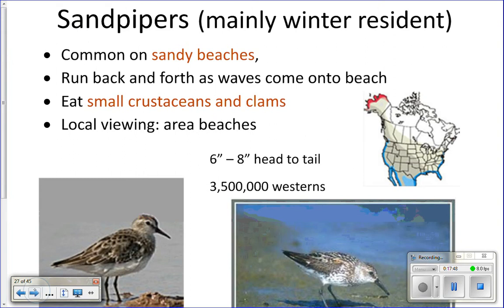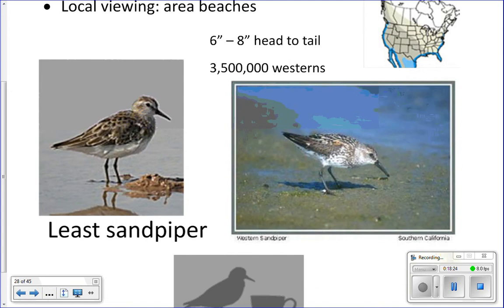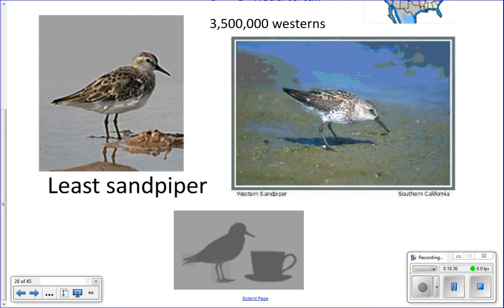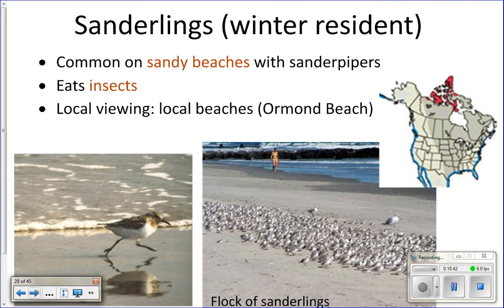Sandpipers are one of the birds you'll see running up and down the beach as waves go in and out — they run up when the wave recedes and run back when it comes in. They're mostly here during the winter and eat small crustaceans and clams. They're about six to eight inches depending on the species. Two types you'll see here are the least sandpiper and the western sandpiper.